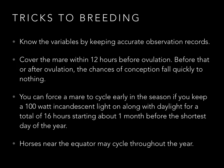Tricks to breeding: know the variables by keeping accurate observation records. Cover the mare within 12 hours before ovulation — before that or after ovulation, the chances of conception fall quickly to nothing. There is an exception if you're using frozen semen, but we're talking about natural live cover here. You can also force a mare to cycle early in the season by keeping a 100-watt incandescent light — not a fluorescent, but an incandescent with a filament — combined with daylight for a total of 16 hours, starting about one month before the shortest day of the year.